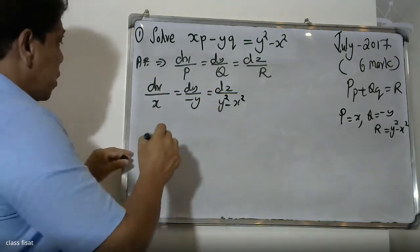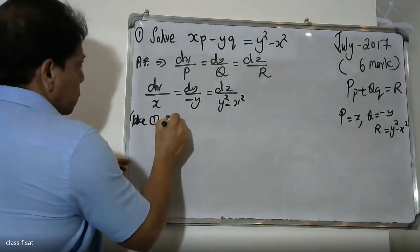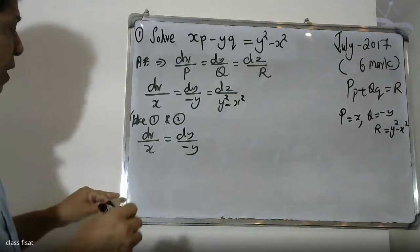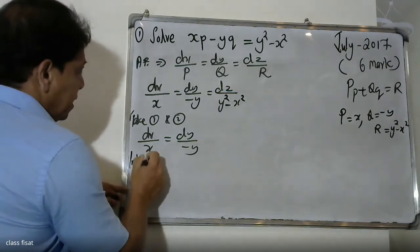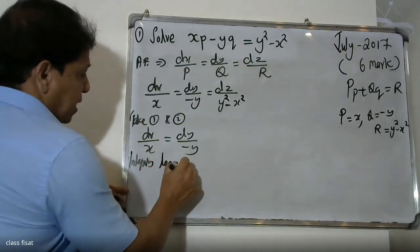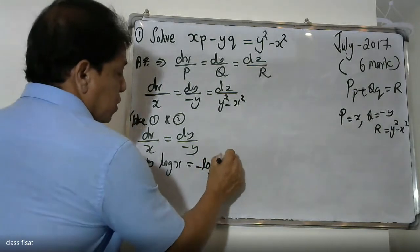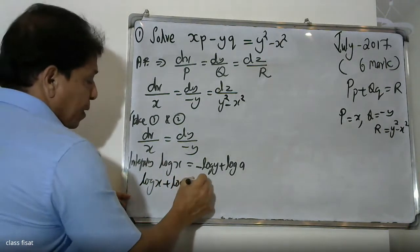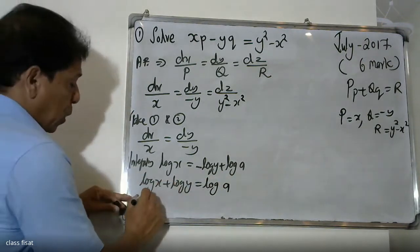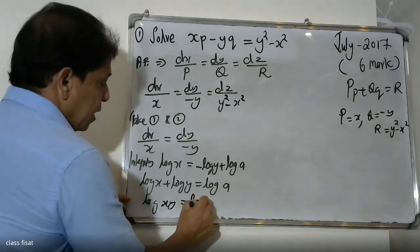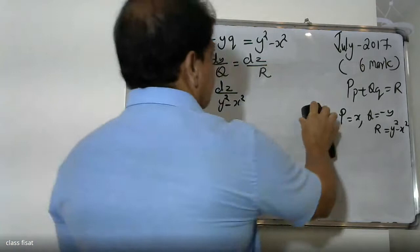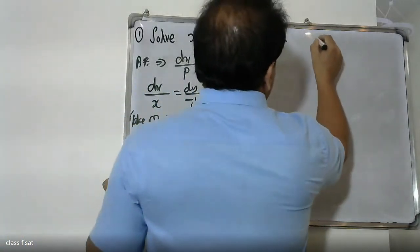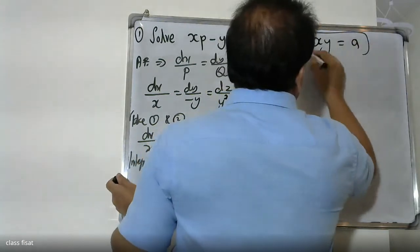Taking the first and second ratios: dx/x = dy/(−y). This is a variable separable form. Integrating both sides: integral of dx/x = integral of dy/(−y), which gives log x = −log y plus log a, so log x plus log y equals log a, meaning xy equals a.